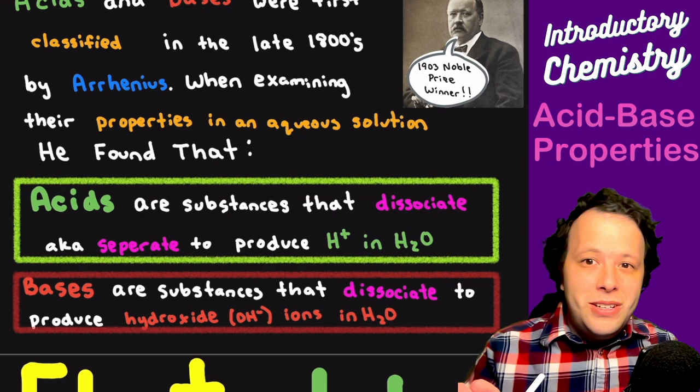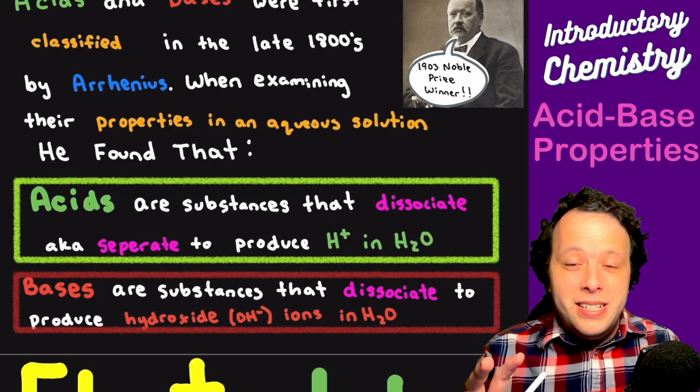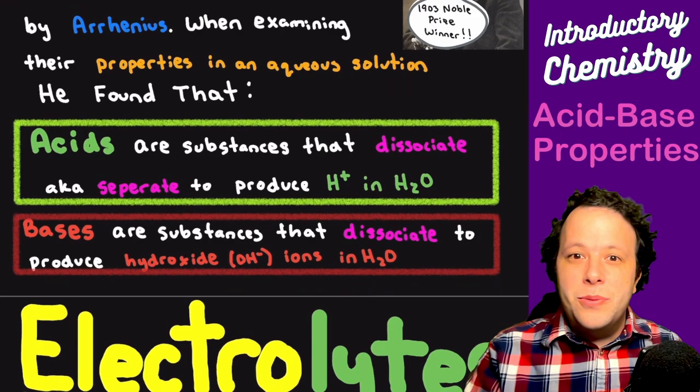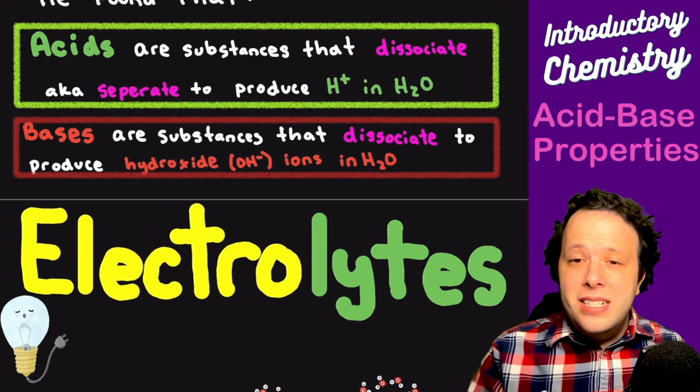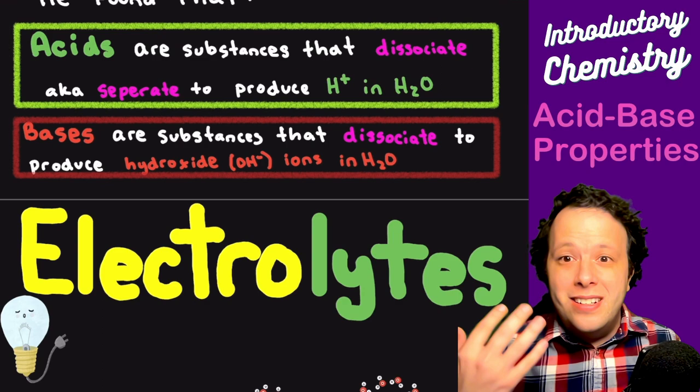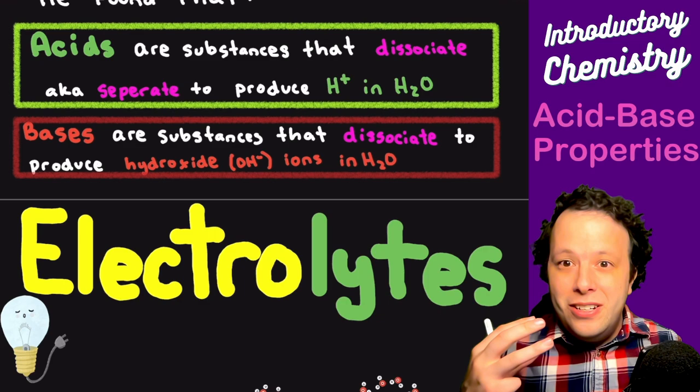When naming acids, you're always looking for an H+ at the beginning of the formula, whereas a base traditionally has an OH- at the end. Being that we're talking about ions, this all relates to electrolytes. All of these different acids and bases can be classified as electrolytes — both strong and weak — because when they dissolve they are ionized, meaning they can conduct electricity.